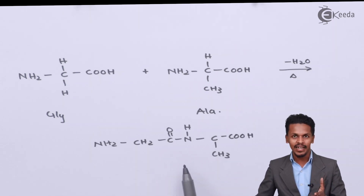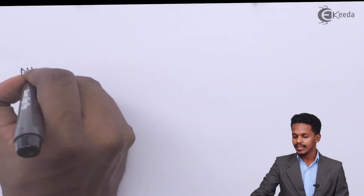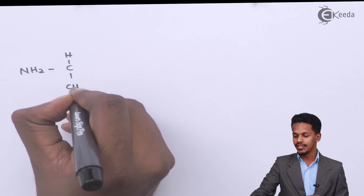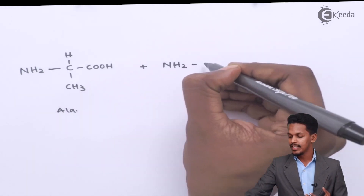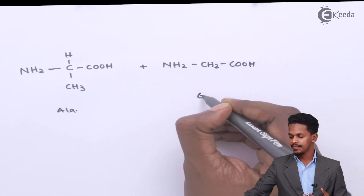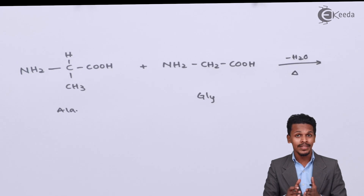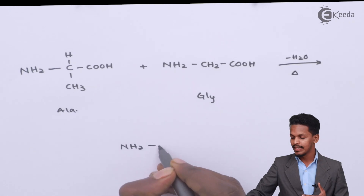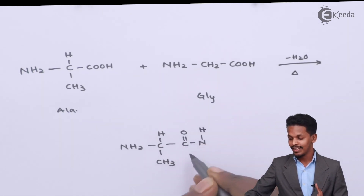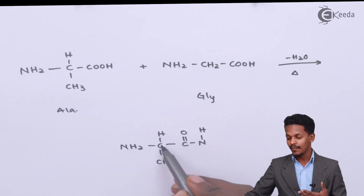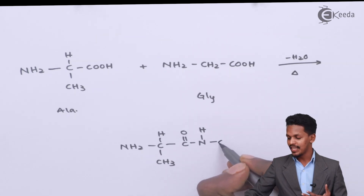So we understand this is a peptide, but what if we compare it with the reaction of alanine and glycine? Alanine is NH2-CH(CH3)-COOH, treated with glycine, which is NH2-CH2-COOH. The product will be NH2-CH(CH3)-C(=O)-NH-CH2-COOH. In the previous reaction we had CH2 beside C double bond O, but here we have CH(CH3) in that position.